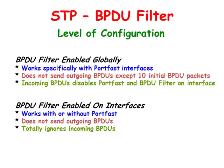While when BPDU filter is enabled on interfaces, it does not send out any outgoing BPDUs. When BPDU filter is enabled globally, incoming BPDUs will disable port fast and BPDU filter on the interface. But when BPDU filter is enabled on an interface, it totally ignores incoming BPDUs, which means it behaves just as if spanning tree was disabled.